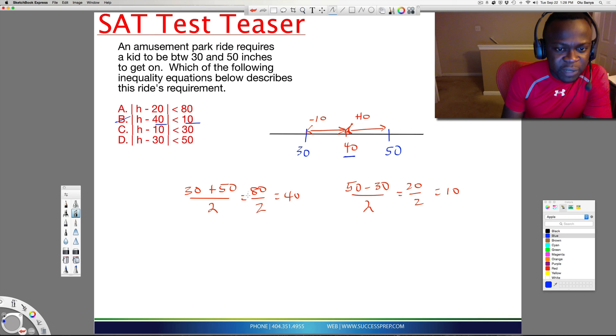So all you had to do is find the average first, which is the 40. And then this number is telling us it has to be within that. So it's within 10 of the 40. So 10 up from the 40, which is 50, and 10 down from the 40, which is 30. So as a result, the answer here is B.